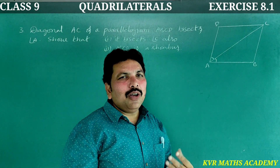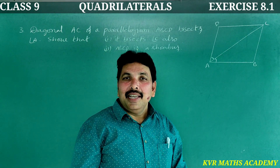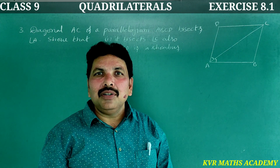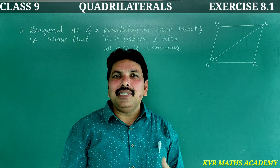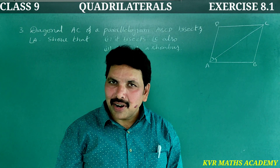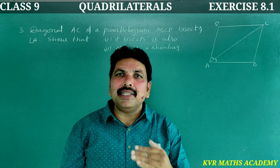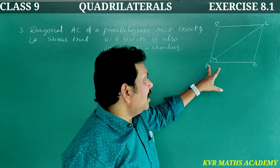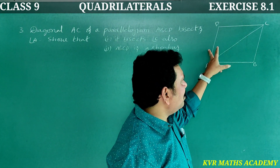A rhombus is a parallelogram in which two adjacent sides are equal. In a parallelogram, opposite sides are equal.